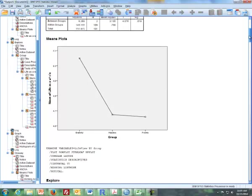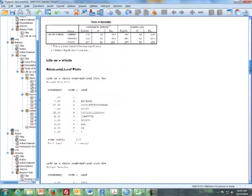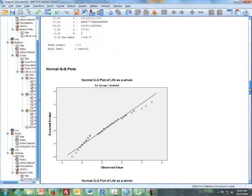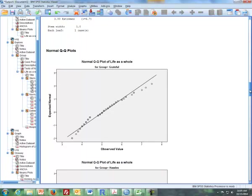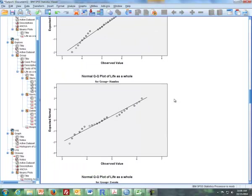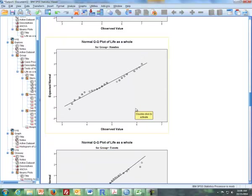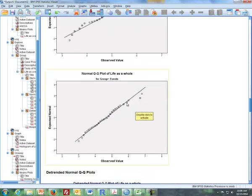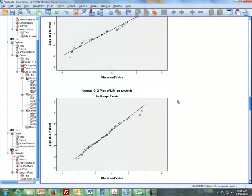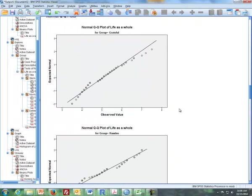The other item we want to check is normality, so we have to do QQ plots for all three groups. Here's the grateful group, and we can find that it's not perfect, but it looks fairly normal. This next group, the hassle group, that looks fairly normal as well. The last QQ plot for normality is the events group, and there may be a couple of data points that stand out, but it looks like for the most part that the data from all three groups are normally distributed.